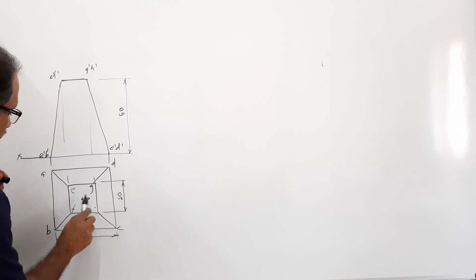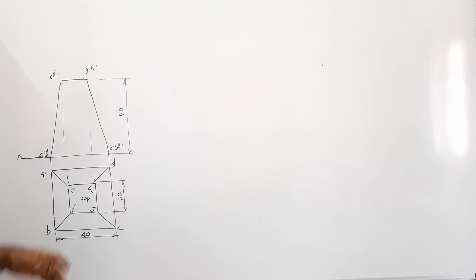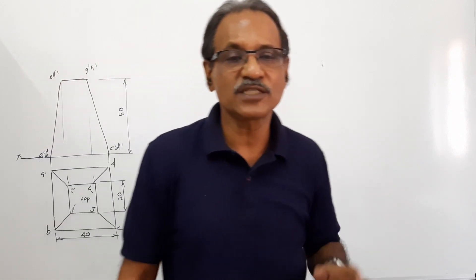E, F, G, H - corners of the top. Height of the frustum is 60.